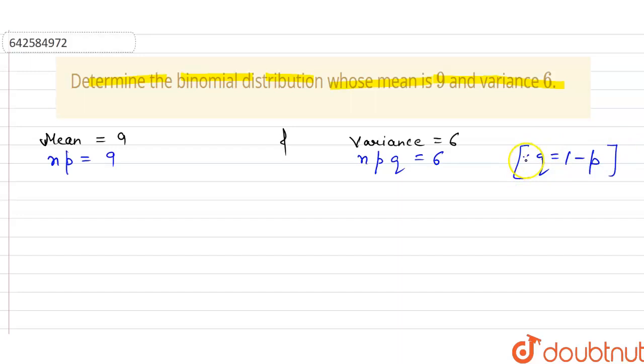p plus q is equal to 1. Then first we divide equation first and second, then we get the value of npq divided by np, that is equal to 6 divided by 9. Then value of q is equal to 2 divided by 3, and